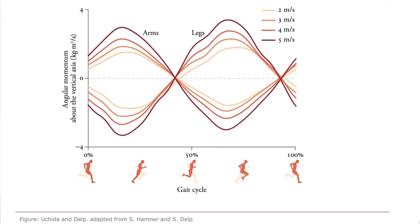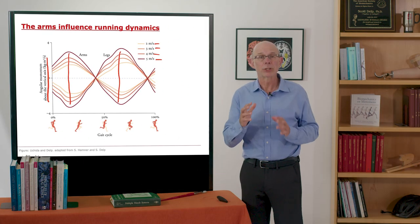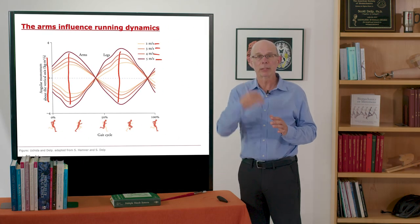What's plotted here is the angular momentum about a vertical axis for the arms at 2, 3, 4, and 5 meters per second. And what you see is they perfectly counteract the angular momentum of the legs. So you see they're equal and opposite. Now the legs are more massive so the arms have to move more quickly to generate the same angular momentum about this vertical axis.